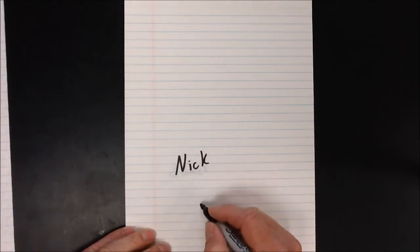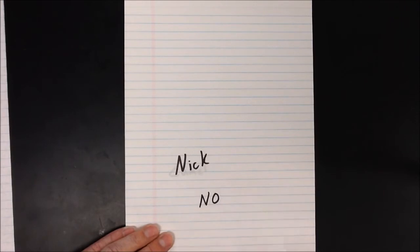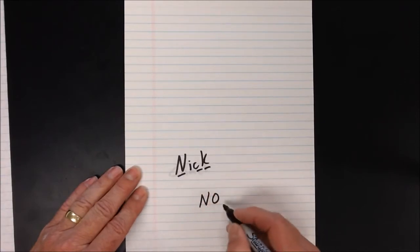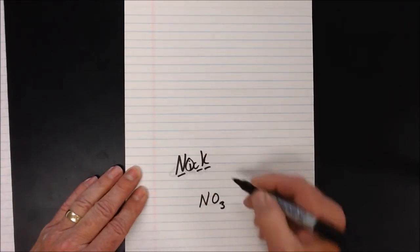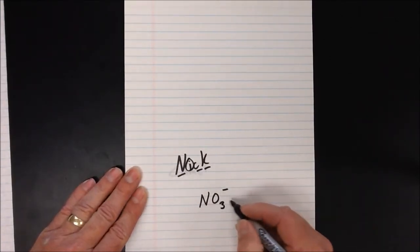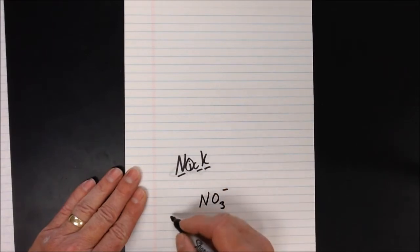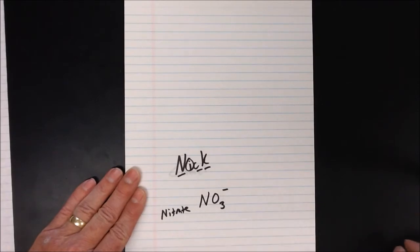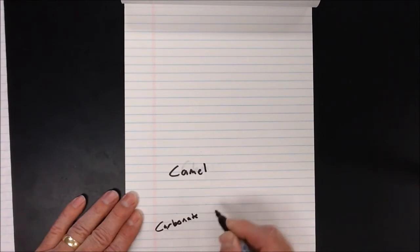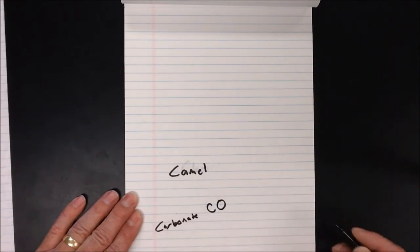Nick helps us memorize the formula and the charge on nitrate. Nitrate is nitrogen with oxygen, but how many oxygens are present? If we look at the word Nick, there are three consonants, so that tells us the number of oxygens. There is one vowel, so that tells us it is a minus one charge. Nitrate is NO3 with a minus one charge.